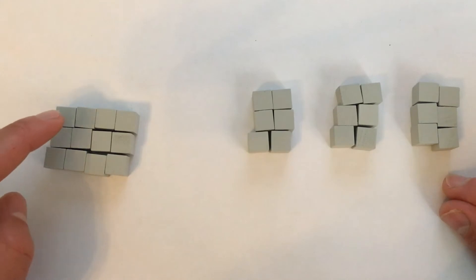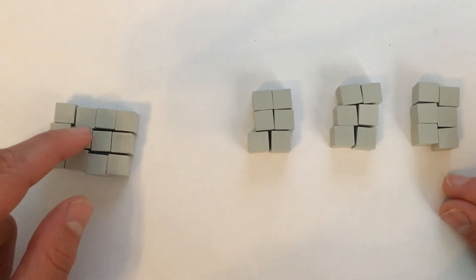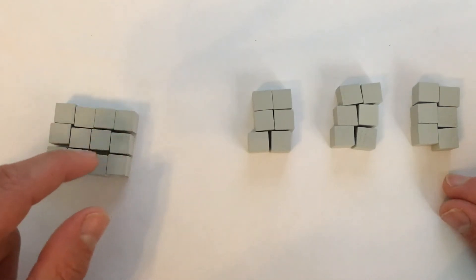So 2 fifths of 30 is 1, 2, 3, 4, 5, 6, 7, 8, 9, 10, 11, 12.